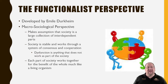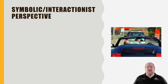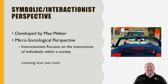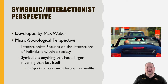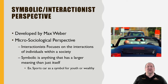The functionalist perspective sees each part of a society working together to benefit the whole, much like a living organism — like a human body. The last perspective is called the symbolic interactionist perspective, developed by Max Weber. This is a micro perspective, where we look at a smaller group of people — small street gangs, cliques, and the like — examining how people interact within a small group within a society.